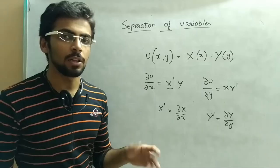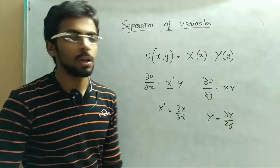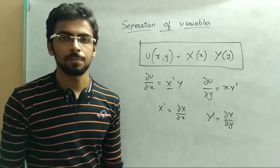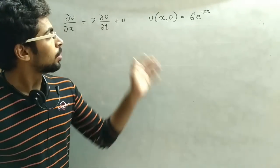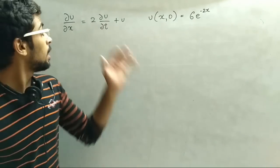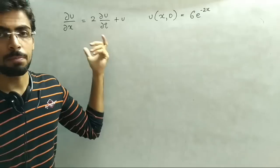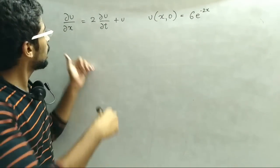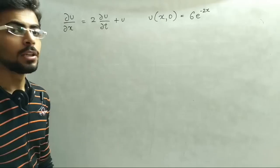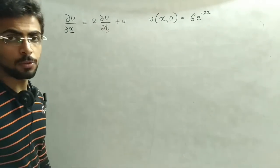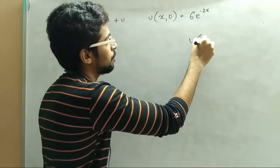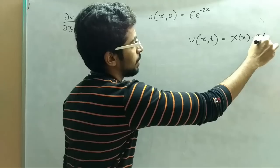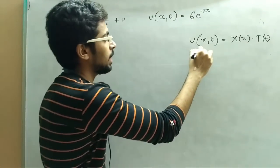These four terms ko yaad rakhna hai and we will solve the example using this function. Saare examples mein aapko yeh function consider kar lena hai aur aapko solve karna hai. Now we will solve the example using variable separable method. In this example, the variables are del of x and del of t - the two functions. So our function will be like u of x and t equals to X of x into T of t.